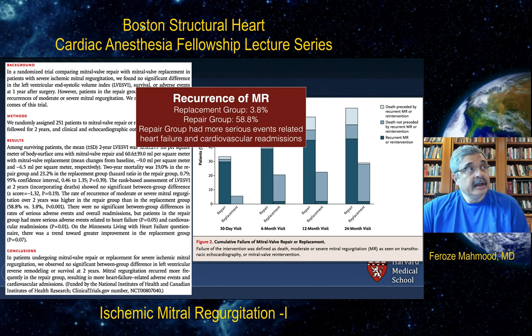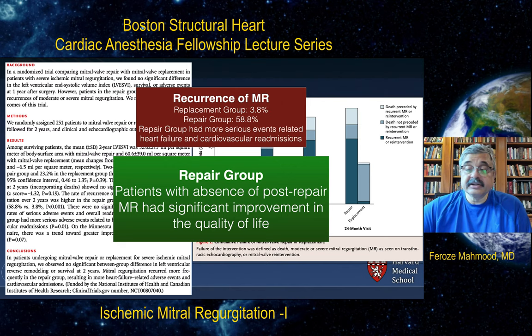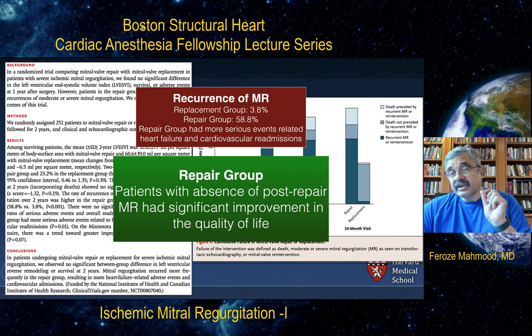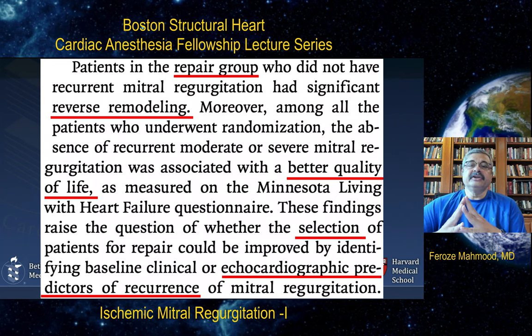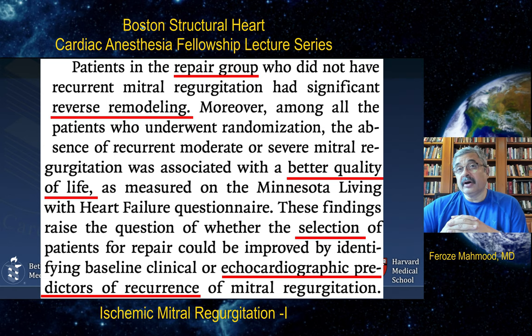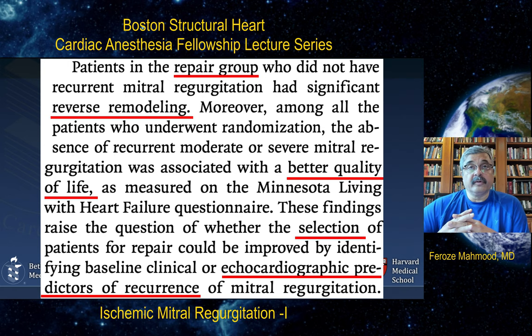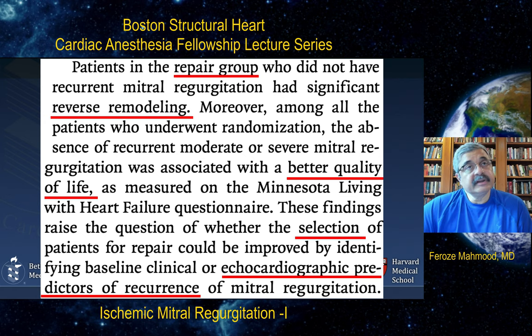However, patients with absence of post-repair mitral regurgitation had significant improvement in quality of life. So maybe a subset of patients who have chronic ischemic mitral regurgitation can benefit from repair. The question is how do we identify those patients. The trial also mentioned that the repair group demonstrating reverse remodeling had better quality of life postoperatively. The problem seems to be not with repair itself, but with over-subscription of repair to patients who are not suitable for it and would benefit from outright replacement.